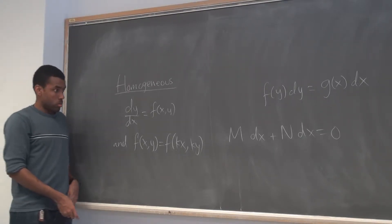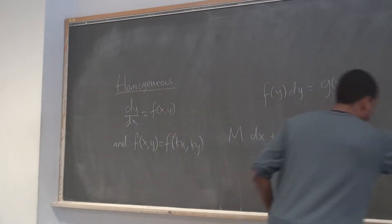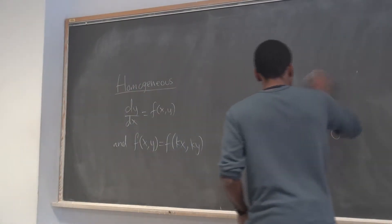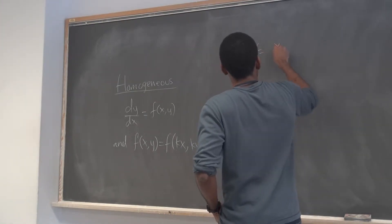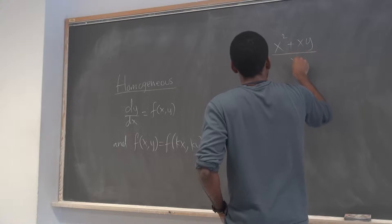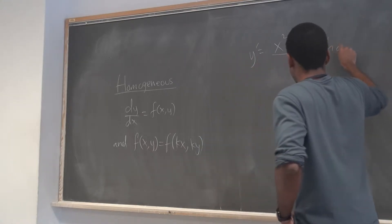Can you show them how? For example, I can have y prime is equal to x squared plus xy over x squared, that's homogeneous.